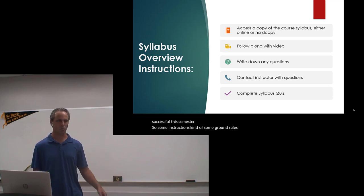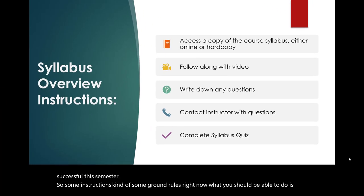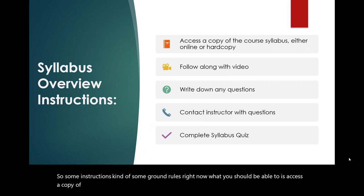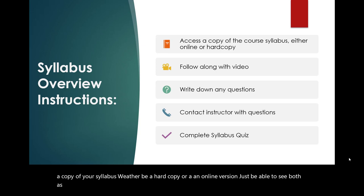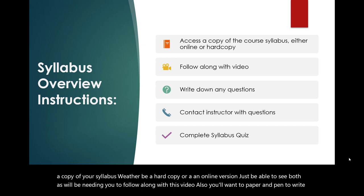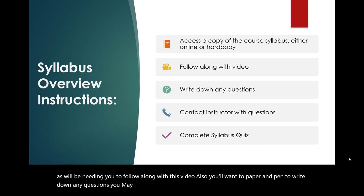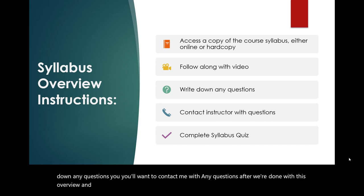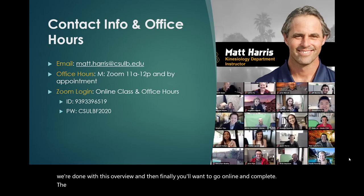Some instructions, some ground rules right now. What you should be able to do is access a copy of your syllabus, whether it be a hard copy or an online version — you'll just be able to see both, as we'll be needing you to follow along with this video. Also, you'll want a paper and pen to write down any questions you may have. You'll want to contact me with any questions after we're done with this overview. And then finally, you'll want to go online and complete the syllabus quiz.